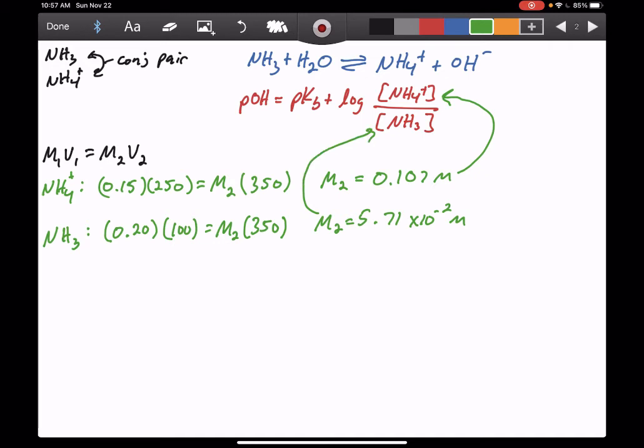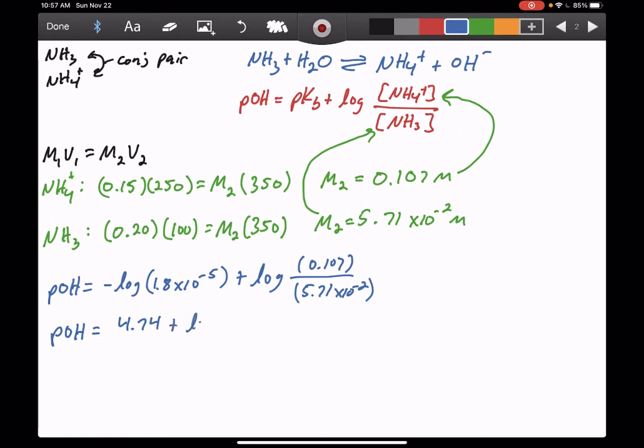So now we can plug everything into our Henderson-Hasselbalch equation. So my POH is going to be equal to the PKB, which is a negative log of 1.8 times 10 to the minus 5, plus the log of my ammonium concentration, 0.107, over my ammonia concentration, 5.71 times 10 to the minus 2. And so we get a POH that becomes equal to 4.74 plus the log of 1.815. And when we calculate that out, we get a value of 5.02 for my POH.